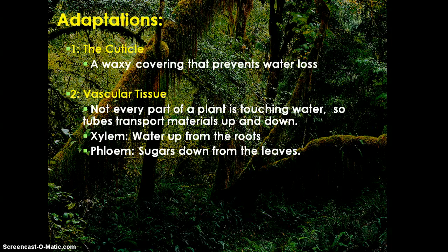The second adaptation is vascular tissue. Not every part of the plant is touching the water now that plants are living on land, so they need tubes that transport materials up and down. The roots are at the bottom where the water is. Xylem is the tissue that pulls water up from the roots. Phloem takes sugar from the leaves where photosynthesis happens and sends it down to the roots so they have energy to grow. An easy rhyme to remember: xylem sucks water up, phloem flows food down.